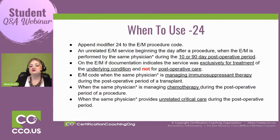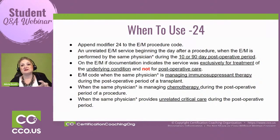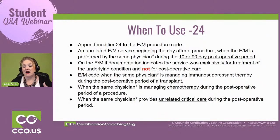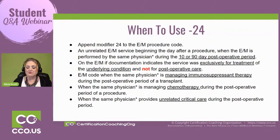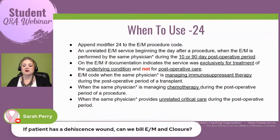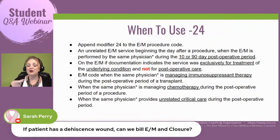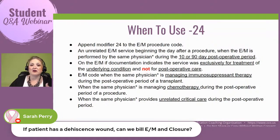When are you going to use modifier 24? We need to think through each modifier this way. Sarah asked a question: if a patient has a dehiscence wound, can we bill an E&M and a closure? A dehiscence is an opening of a surgical wound. So it would not be a separate E&M — it would be in the global package because it would be part of the care of, say, a hysterectomy.